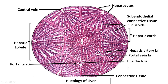At the periphery of this lobule there are three structures called portal triad structures. The six corners of the hepatic lobule have portal triad structures which include the hepatic artery branch, the portal vein branch, and a tiny ductule called the bile ductule.